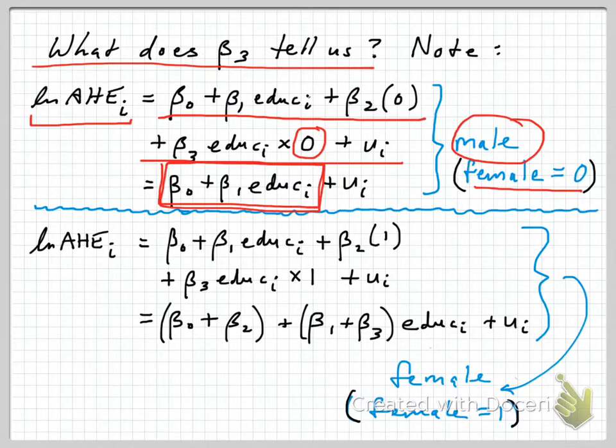When we turn to the case of females, we now have a slightly more complicated expression because female is now equal to 1, and those values are not going to drop out. In addition to this part which we had for males, we have to add in beta 2 times 1, since the person is female, and then the interaction term, female is 1, so we have to add in that part as well.